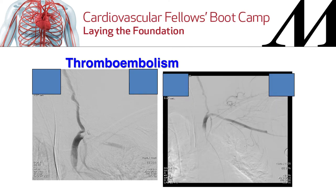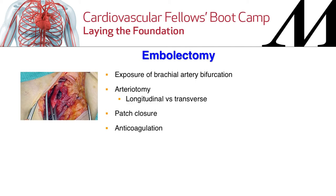An example shows thromboembolism just after the vertebral takeoff, which was lysed with clot pushed forward. Over-the-wire Fogarty attempts can be successful, though embolism risk into the vertebral must be considered. For acute embolectomy, exposure is typically at the brachial artery bifurcation. A longitudinal arteriotomy is usually needed given the small artery size, with patch closure rather than primary closure, followed by mandatory anticoagulation.